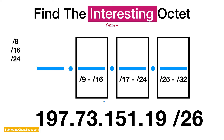There are four different ways to identify the interesting octet. The first way is to memorize that if it's slash 9 through 16, you focus on the second octet. If it's slash 17 through slash 24, you focus on the third octet. If it's slash 25 through slash 32, you focus on the fourth octet. So for slash 26, this means we focus on the fourth octet. That's option A.